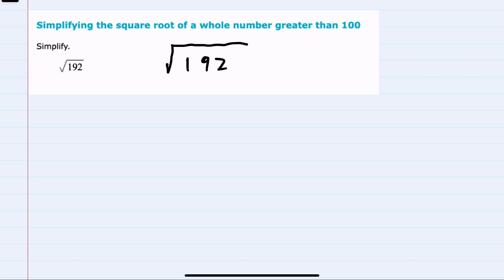To simplify the square root of 192, we would want to rewrite this as the product of square roots, but we would want one of these to be a perfect square so that we can remove it from the square root. So I need to write 192 as the product of two numbers, one of them being a perfect square.